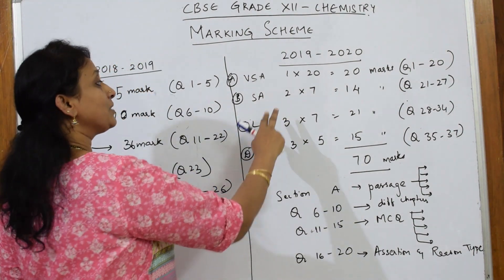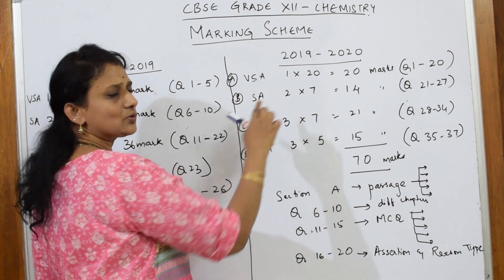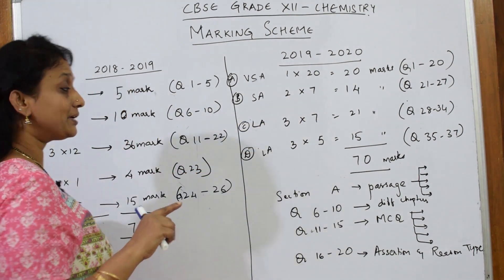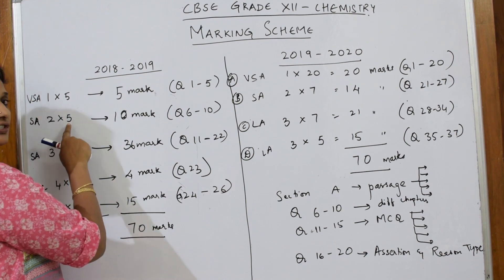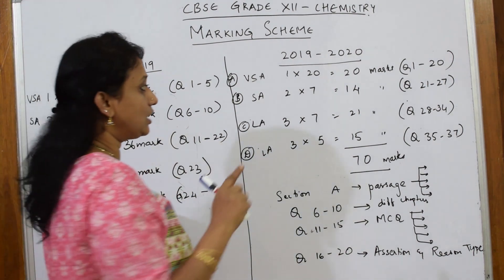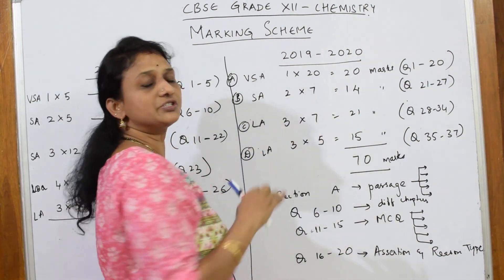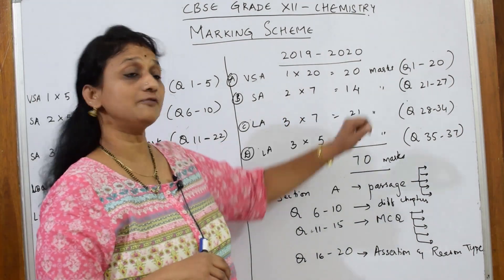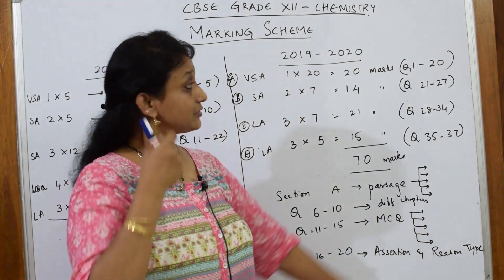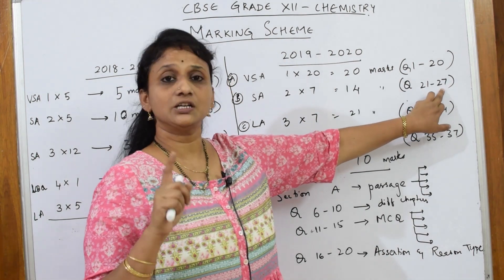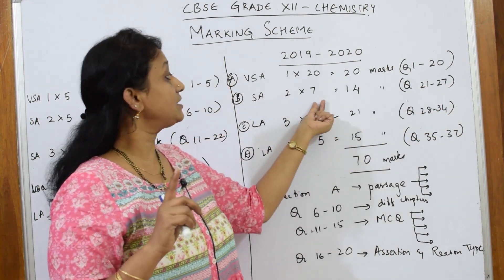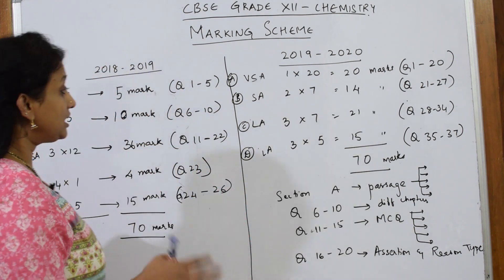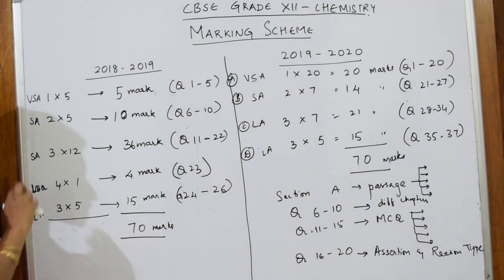In the upcoming year, the short answer section still has two-mark questions, but instead of five questions you're now supposed to attempt seven questions, each carrying two marks — that's 14 marks total. These questions run from question number 21 to 27.